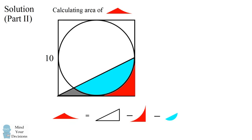The area of the right triangle is its base times its height divided by 2. This right triangle has a height of 5, so its area will be 10 times 5 divided by 2.